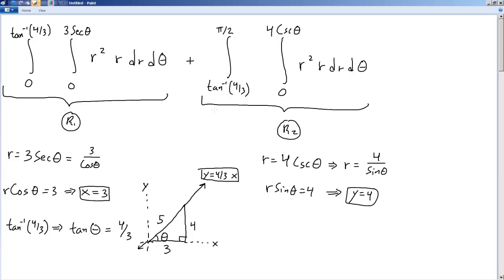Now, from this theta we already know, we already figured it out, from that value of theta to theta equals pi over 2. Well, that's just going to be the rest of the journey from here's this line, y equals 4 thirds x to theta equals pi over 2. That's this bit that we're talking about.